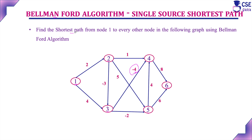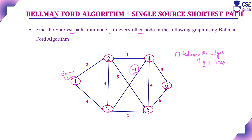Find the shortest path from node 1 to every other node in the following graph using Bellman-Ford algorithm. Vertex 1 will be considered as the source vertex. The first key point is that we need to relax the edges n minus 1 times, where n is the number of vertices in the given graph. Here our graph has 6 vertices, so we have to relax 5 times.